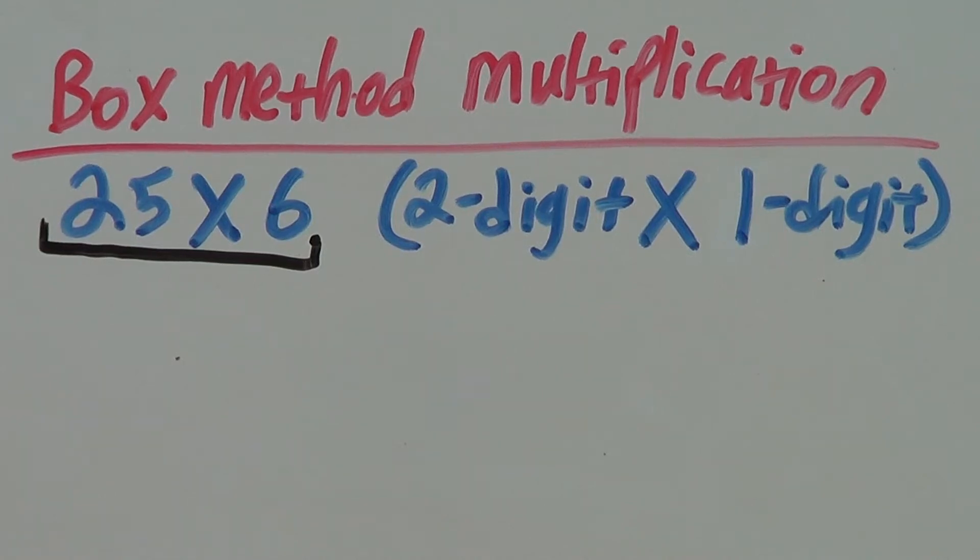Hello and welcome. In this video, we are going to do box method multiplication, which is a method to make multiplying big numbers easier. In this example, we are going to look at a 2 by 1 digit box.